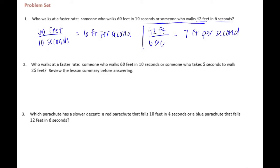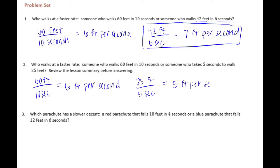Number 2: Who walks at a faster rate, someone who walks 60 feet in 10 seconds or someone who takes 5 seconds to walk 25 feet? We already know that 60 feet in 10 seconds equals 6 feet per second from the last question. Then 25 feet in 5 seconds, 25 divided by 5 is 5 feet per second. So the person walking fastest at 6 feet per second would be the first person.